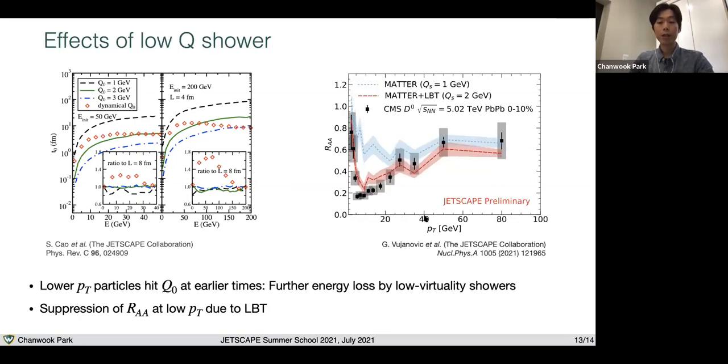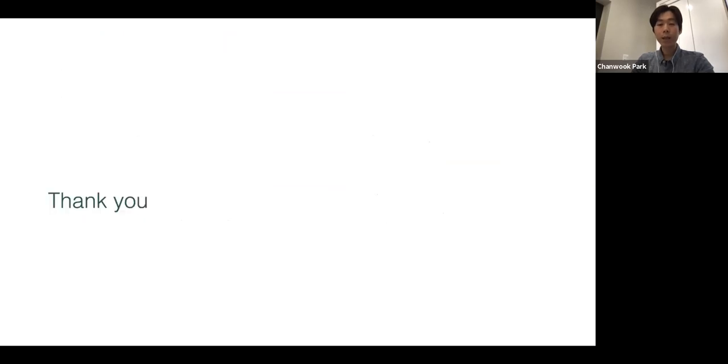Finally, this picture shows the effect of low virtuality shower on top of the high virtuality shower. This is the nuclear modification factor R_AA for heavy quarks, using Matter only and Matter plus LBT with switching virtuality of Q0 equals 2 GeV. You can see this R_AA is largely suppressed at lower pT when you attach LBT compared to the case of Matter only. This is because particles with low energy enter low virtuality phase earlier time, and they stay longer time in this phase and lose more energy due to the LBT shower. This is why we see this large suppression due to LBT while the high pT particles are less sensitive to the LBT phase.